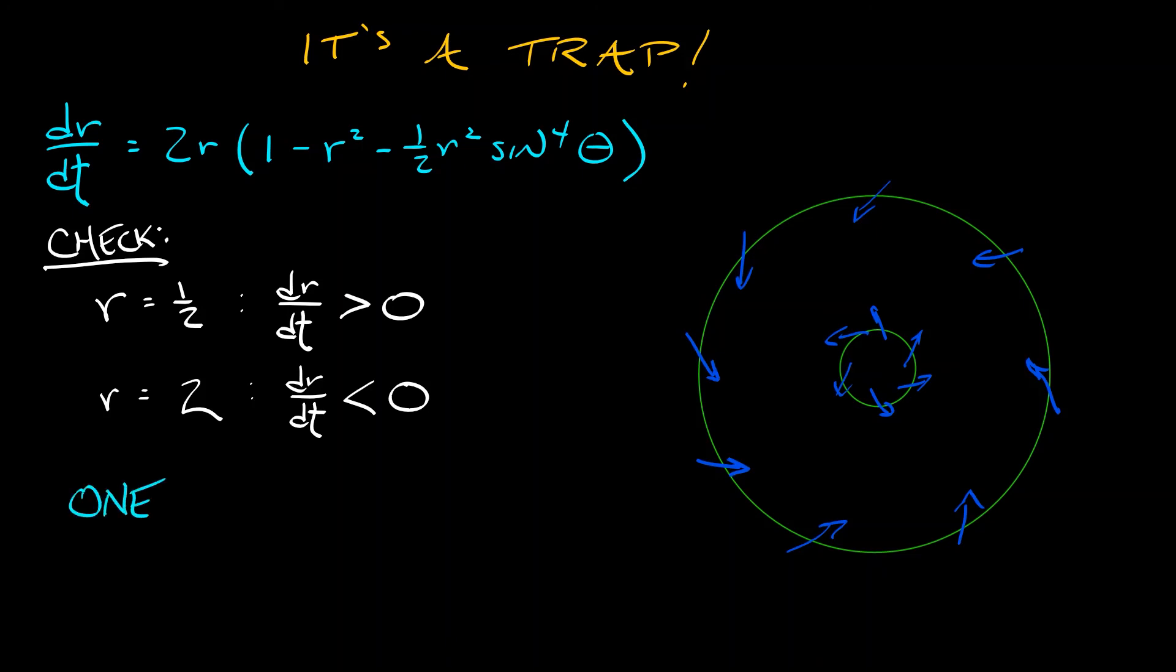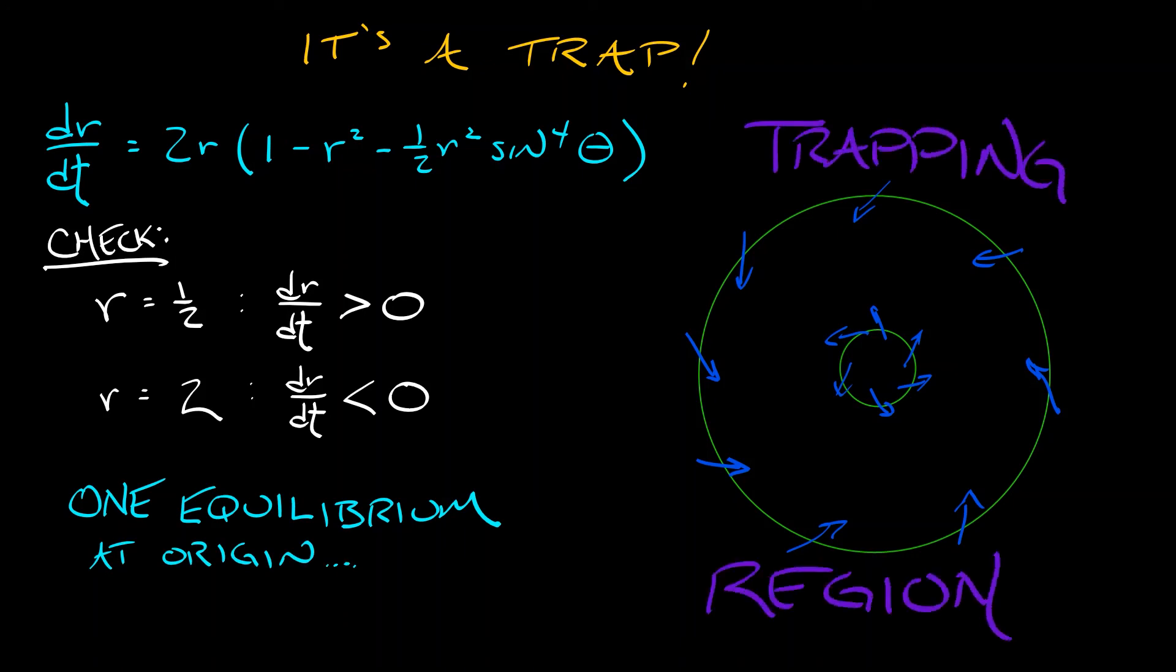Combining this with the fact that this system has one and only one equilibrium at the origin, we have a forward invariant trapping region. Poincaré-Bendixson says that there is a limit cycle inside of that region.